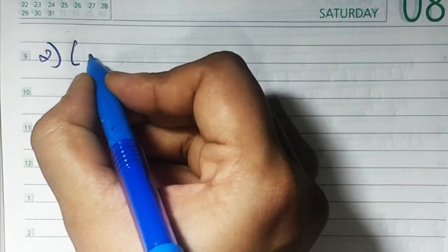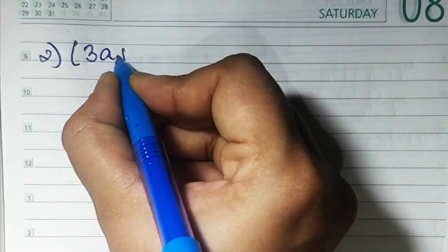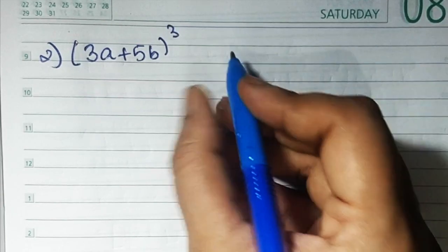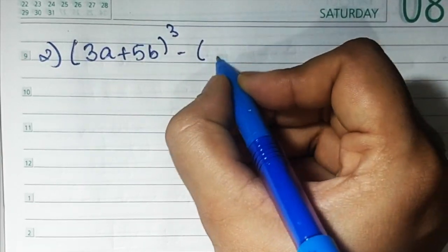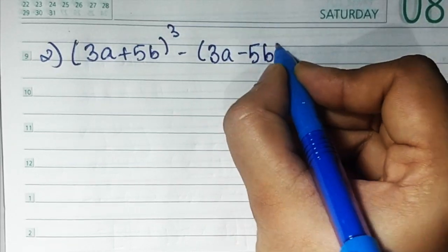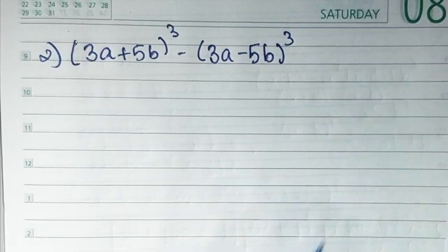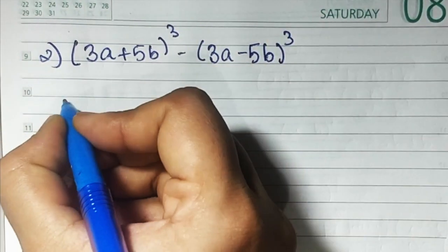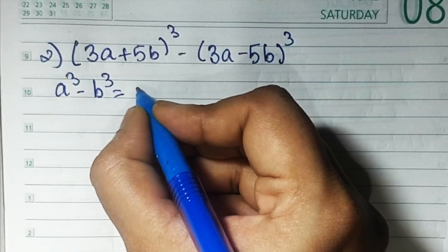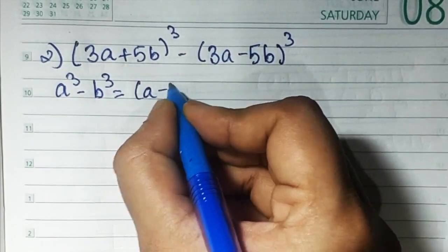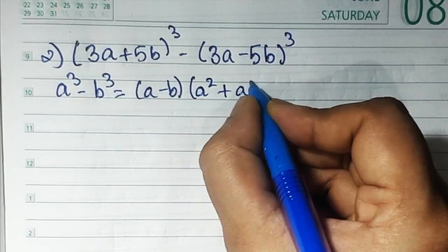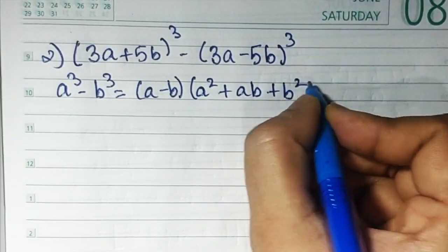Sum number 2 is (3a + 5b) the whole cube minus (3a − 5b) the whole cube. Again the same formula: a cube minus b cube equals a minus b times a square plus ab plus b square.